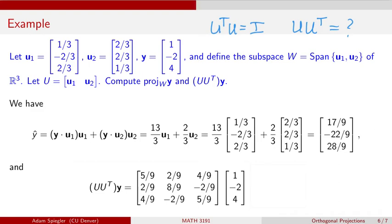The calculation here is not too terribly exciting, but you can check when I take U times U transpose, we get the 3 by 3 matrix whose first column is 5 ninths, 2 ninths, 4 ninths, whose second column is 2 ninths, 8 ninths, minus 2 ninths, and whose third column is 4 ninths, minus 2 ninths, 5 ninths.